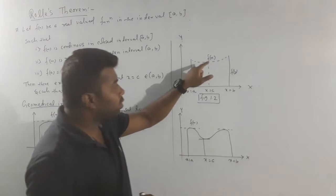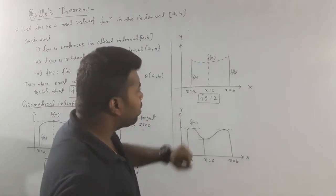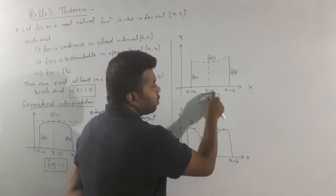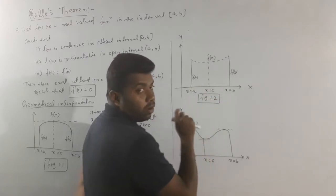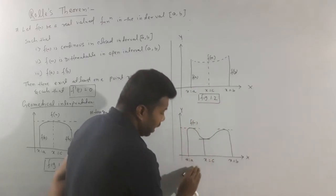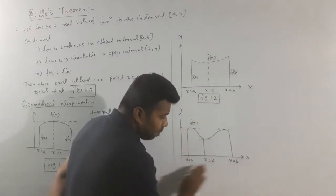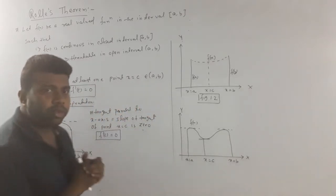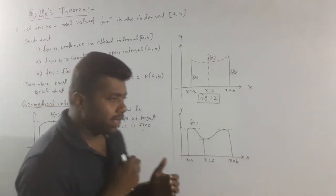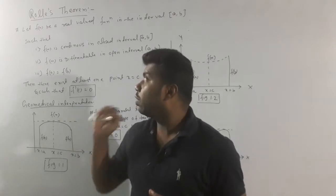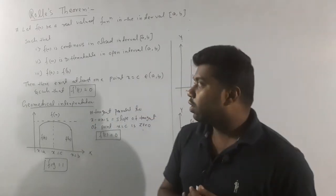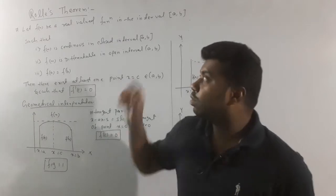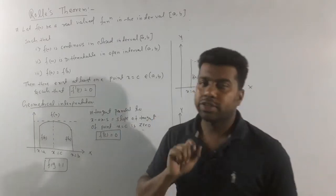You can see Figure 1.2 — here is x equal to a and x equal to b, and then x equal to c is the point. So, if you are interested from the exam point of view, you generally have to verify Rolle's theorem.